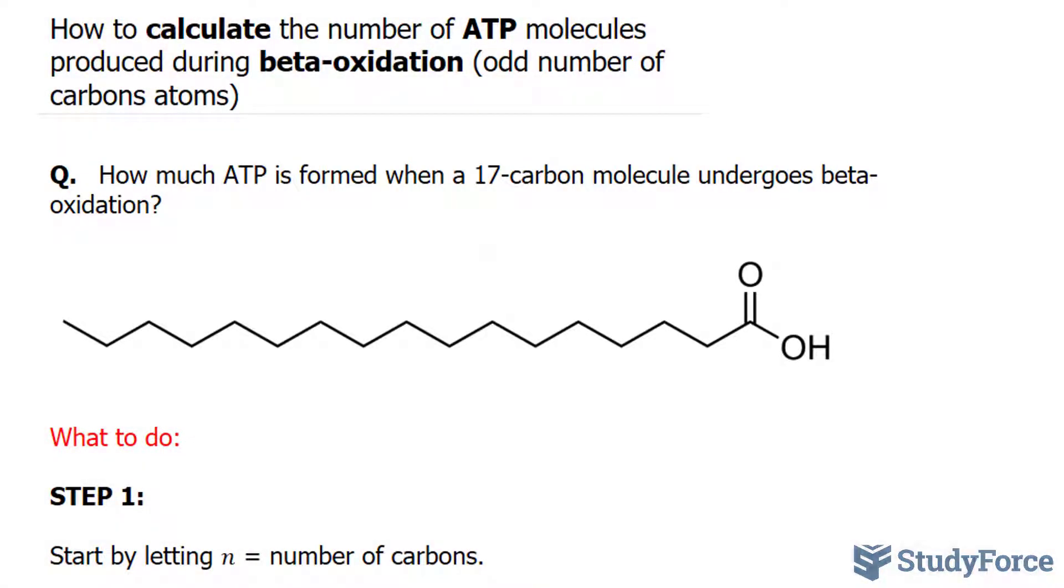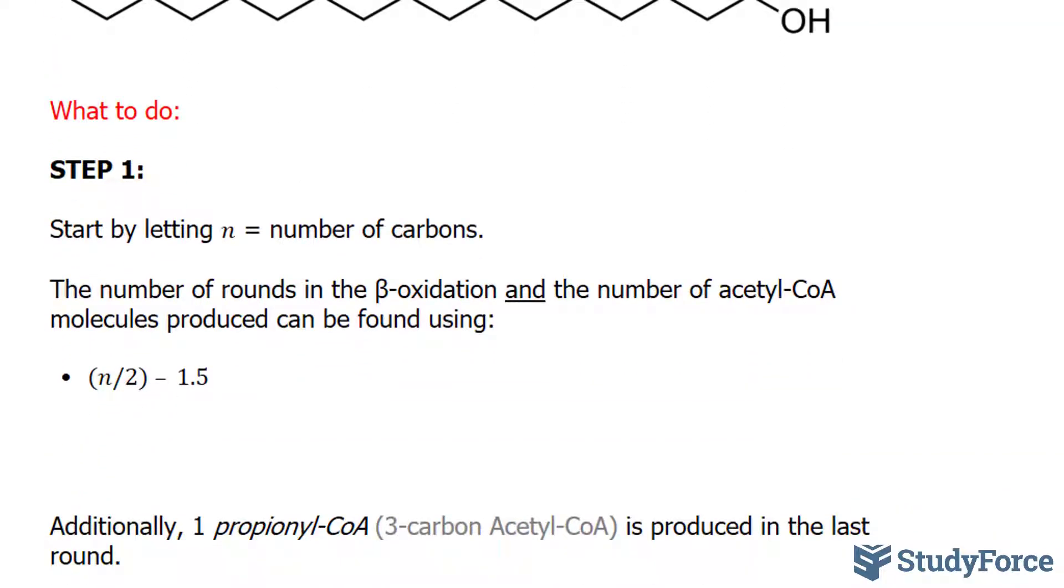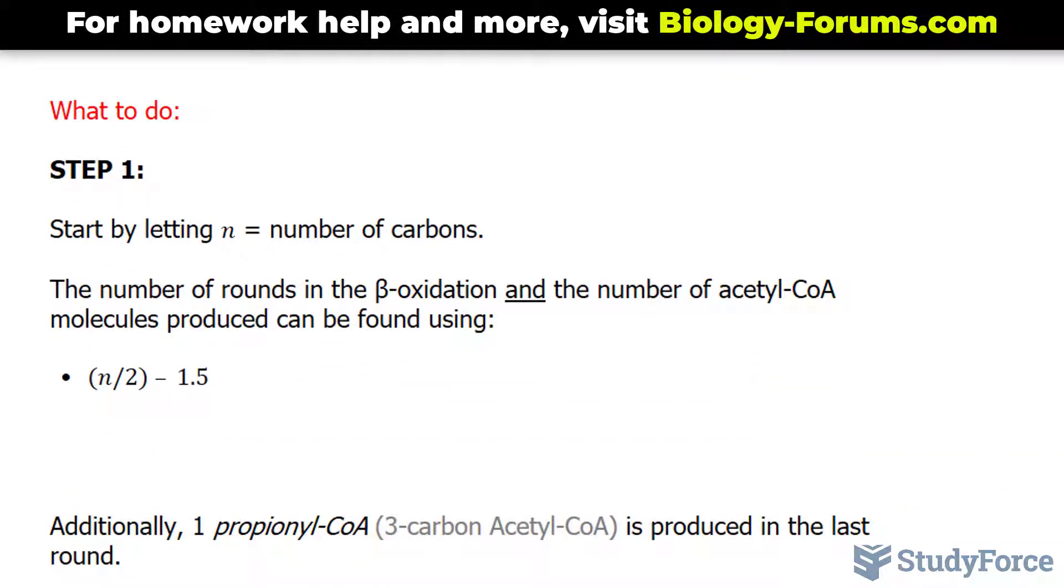Take a look at our fatty acid. Notice that each of these vertices represents one carbon atom, and together there are 17 of them. In step number one, what we have to do is let N represent the number of carbon atoms. So N is equal to 17.